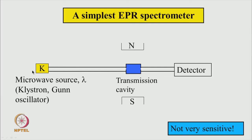Microwave power comes from some source - it could be a klystron oscillator or a GAN oscillator. The sample is kept inside a transmission cavity. Microwave enters through the iris here, comes out through a waveguide to the detector, and this sample is kept in the magnetic field. By scanning the magnetic field, one can see the spectrum.